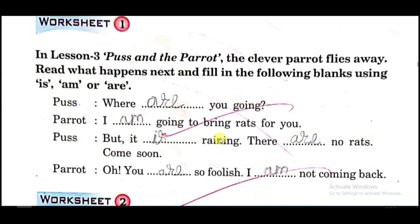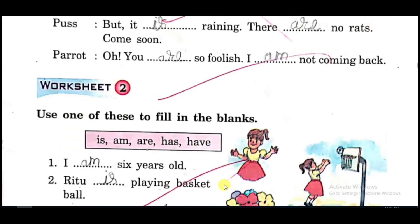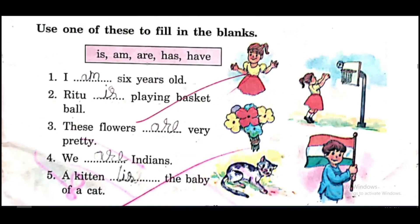Puss says: 'But it is raining. There are no rats — come soon.' Next, Parrot says: 'Oh, you are so foolish.' After 'I' we use am — I am not coming back.